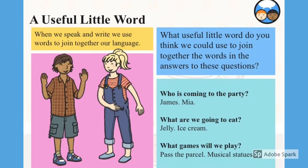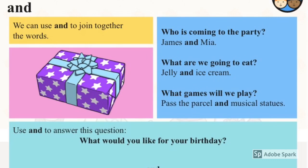What useful little word do you think we could use to join together the words in the answers to these questions? Who is coming to the party? James? Mia? What word could you use to join those two names together? What are we going to eat? Jelly? Ice cream? Well done. We can use 'and' to join together those words. Who is coming to the party? James and Mia. What are we going to eat? Jelly and ice cream.